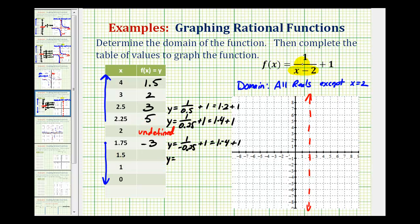We can always verify these on the calculator. When x is equal to one, notice the denominator is going to be negative one. One divided by negative one is negative one, plus one is equal to zero.